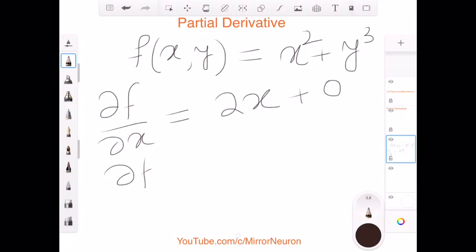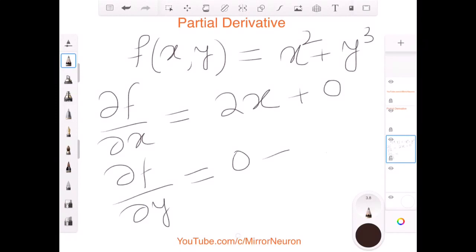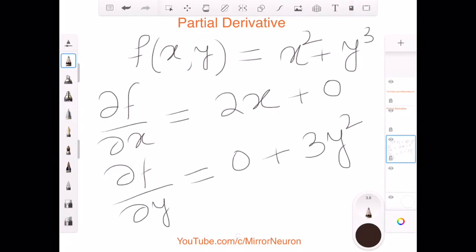Similarly, if we have derivative of f with respect to y, then we know that x is not changing with respect to y because there is no term of y within that. So it is 0 plus it will become 3 times y square. This is the concept of partial derivative. That means when I am considering the change in one of the variable, I am hoping that the other variable is constant or static. And that is how we calculate, and this is known as partial derivative.